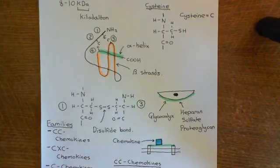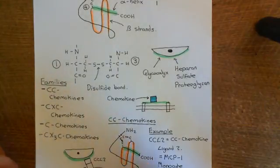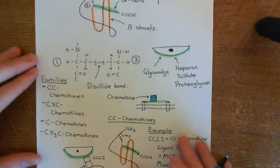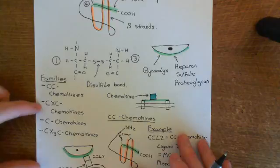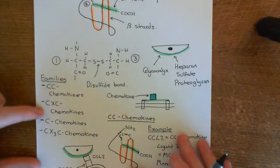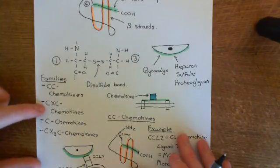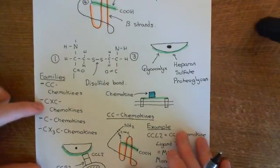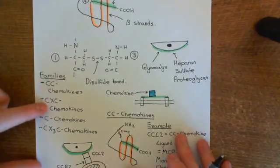Welcome to this next video in which we are discussing chemokines. In this video we want to move on to discussing the CXC family of chemokines. This family is very similar to the CC chemokines. The CC chemokines and the CXC chemokines are the main two families of chemokines — nearly all chemokines are either a CC chemokine or a CXC chemokine.